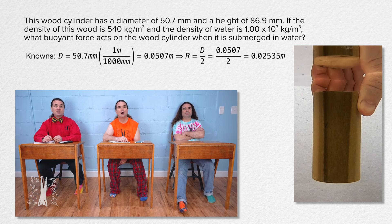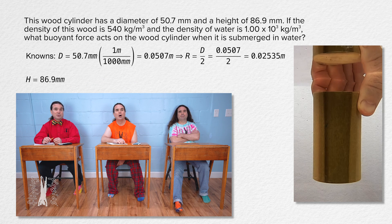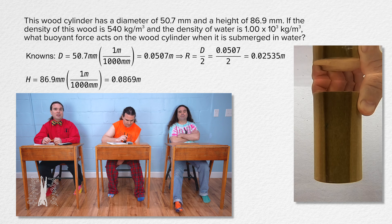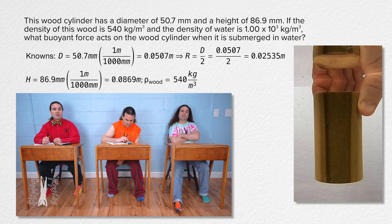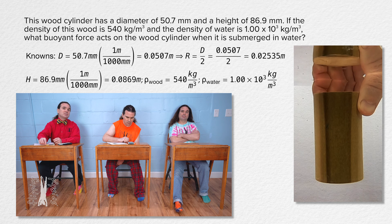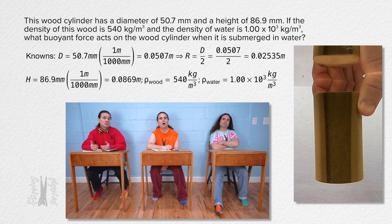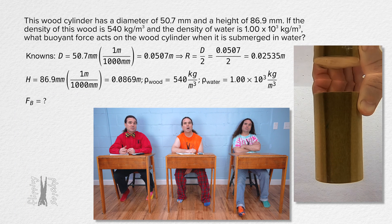And the height is 86.9 millimeters, which we can convert to meters: it is 0.0869 meters. And we know the densities of the wood and water. The density of wood equals 540 kilograms per cubic meter, and the density of water equals 1.00 times 10 to the third kilograms per cubic meter. And we are solving for the buoyant force.